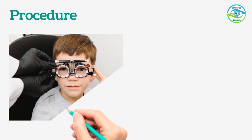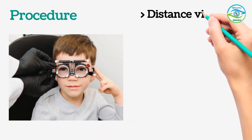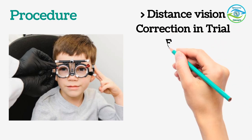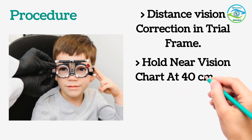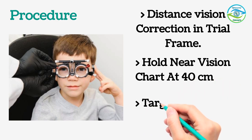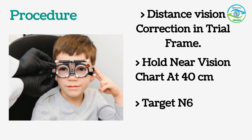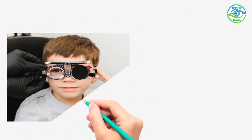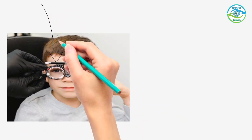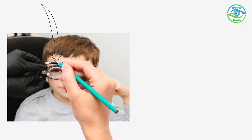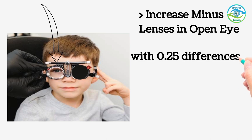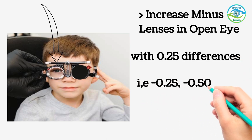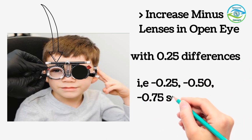First, we will fit the patient with a trial frame with distance vision correction and ask them to hold the near vision chart at 40 cm. The target will be N6. In the patient's open eye, we will gradually increase minus lenses in steps of 0.25 — for example, -0.25, -0.50, -0.75, and so on.